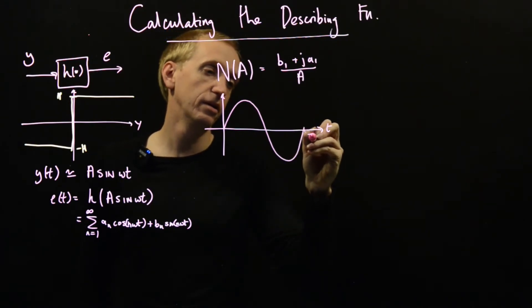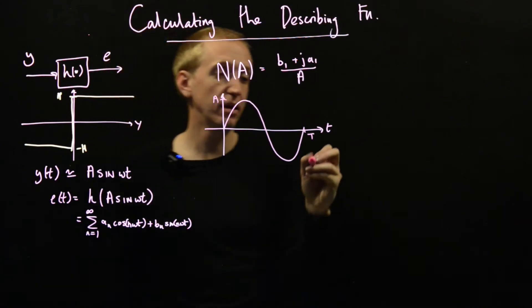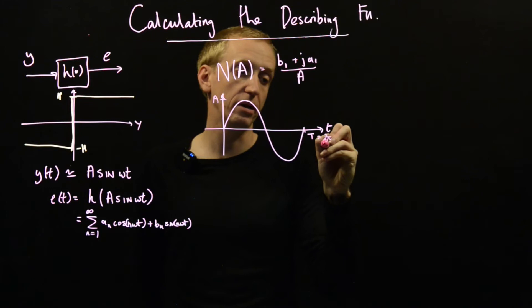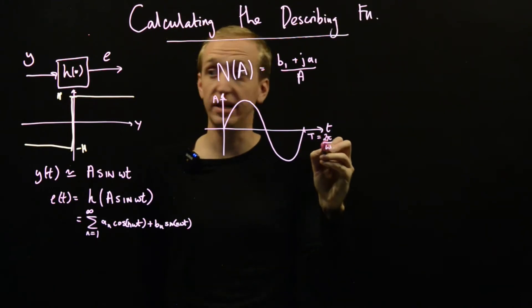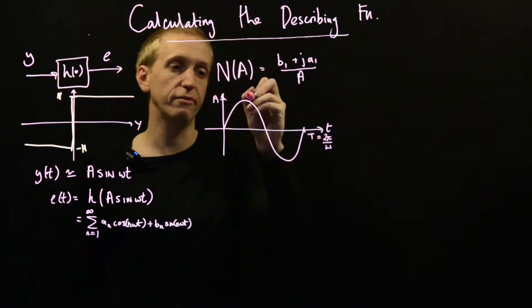So our input function y(t), it looks something like this. This is the period. It has amplitude a. What does the period equal to? Well, it's just equal to 2π over ω. ω here is the frequency. And then, yes, a is the amplitude. And so this is y(t).